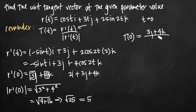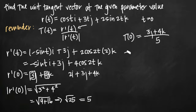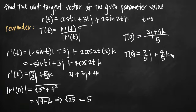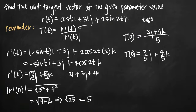We plug positive 5 into the denominator of our unit tangent vector equation. Distributing the one-fifth across the components, our final answer is T(0) equals three-fifths j plus four-fifths k. This clean form with coefficients on each component is the best form for the final answer. And that's how you find the unit tangent vector of a vector function at the given value of the parameter.